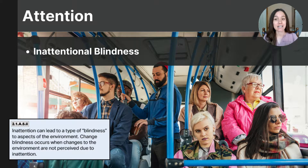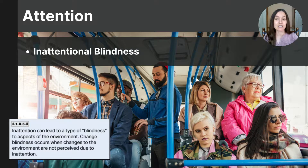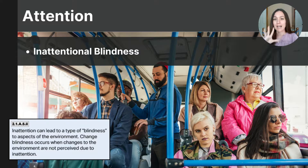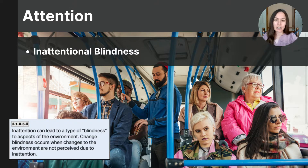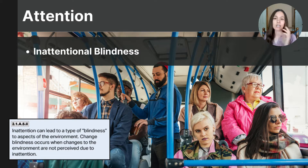Selective attention has an unintended consequence called inattentional blindness — a psychological phenomenon where individuals fail to notice unexpected objects or events in their environment because their focus is directed elsewhere. While concentrating on one task, we completely overlook other visible elements around us. Magicians use inattentional blindness to perform tricks by directing audience attention to one area — like a particular hand — while secretly executing a trick in the other. Pickpockets exploit this concept too, creating distractions through conversation, commotion, or bumping into their victim, making them less aware of their pockets or bags, particularly effective in crowded or noisy environments.